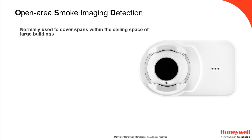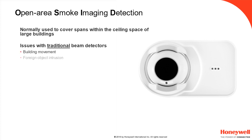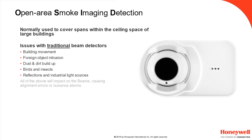Beam detection is normally used to cover large open spans within the ceiling space of buildings. Traditional beam detectors with a single photo receiver are typically susceptible to well-known issues. These range from building movement, foreign object intrusion, dust and dirt build-up, birds and insects, and reflections and industrial light sources.